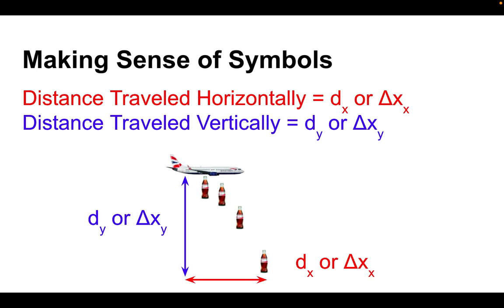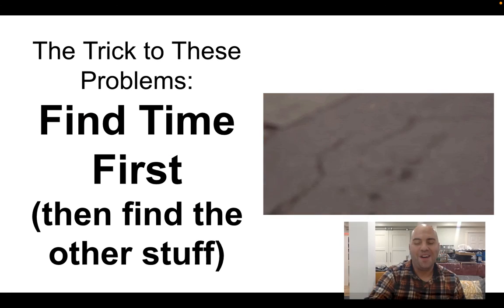Let's talk about the symbols you might see. The horizontal distance is written as D_x or ΔX, meaning displacement in the X direction. The vertical distance is D_y or ΔY, meaning displacement in the Y direction. We need to be able to differentiate between what's happening horizontally and what's happening vertically.